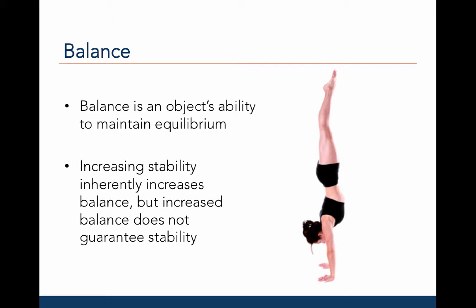Balance is an object's ability to maintain equilibrium, or to balance the center of gravity over the base of support. If you increase stability, inherently you increase balance. But increased balance does not guarantee stability. The picture on the right illustrates this point. If the person doing a handstand increases her base of support, she will increase her balance. However, although she is able to maintain her center of gravity over her base of support and is thus maintaining equilibrium, she would not be considered stable — it would be very easy to tip her over, off balance, and disrupt her stability.